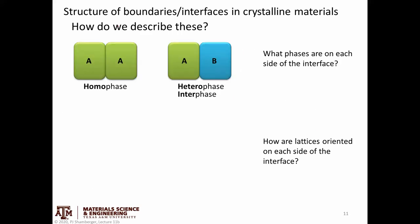There is a large variety of different interfaces. In a general classification scheme, the first thing we consider is what is on either side of the interface. If I have two of the same thing — say crystalline iron and crystalline iron — that's a homophase, or same-phase interface. Versus if I have two different things, like iron and an iron carbide precipitate or a nickel alloy, this would be a heterophase or interphase interface, meaning I have different phases on either side.